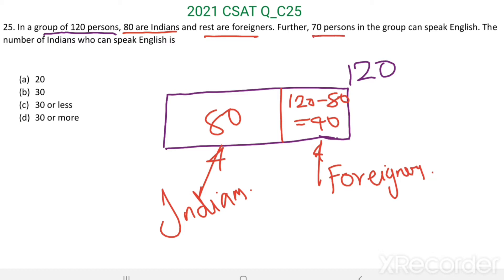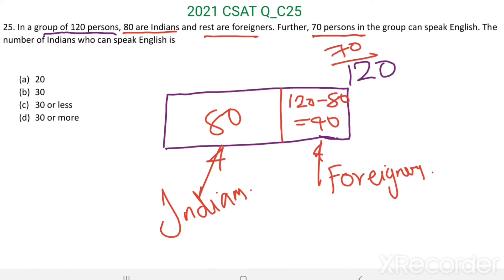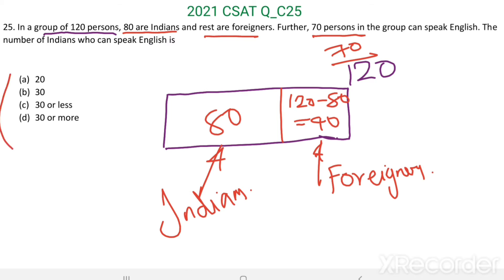70 persons in the group can speak English. 70 out of this 120 can speak English. Then the number of Indians who can speak English is, four options are given here.